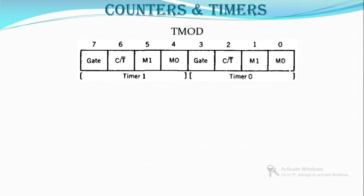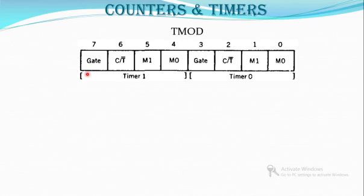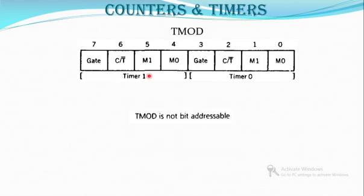Hello students, today we will cover the second register involved. Learning more modes of operation. As we discussed earlier, the TMOD register is like a duplicate — the first nibble and the second nibble form a duplicate. Timer 0 uses the lower nibble while the upper four bits belong to timer 1. Let us see why the first half and second half are the same.